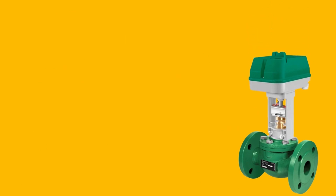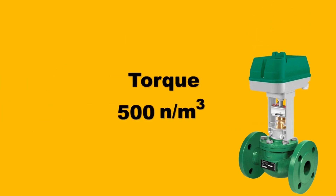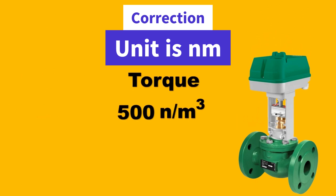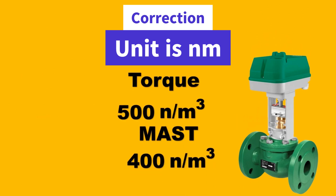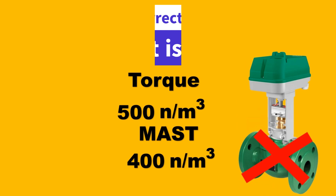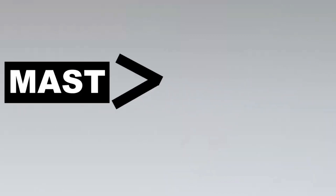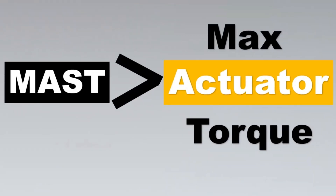Imagine we take this assembly of actuator and valve and put it all together. The actuator can have a torque of 500 Newton-meters, however the MAST is 400 Newton-meters — that is, the Maximum Allowable Stem Torque is just 400, but we can give 500. Is this combination good? The answer is no — it will destroy your valve. So we learn a very important equation: MAST must always be greater than the maximum actuator torque.